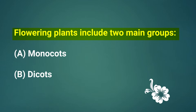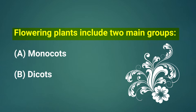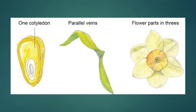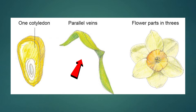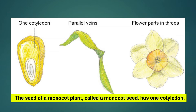Flowering plants include two main groups: the monocots and the dicots. Here we have a picture. The first picture shows the one cotyledon, the second shows the parallel veins, and the third picture shows us the flower parts in threes. The seed of a monocotyledonous plant, called a monocot seed, has one cotyledon.